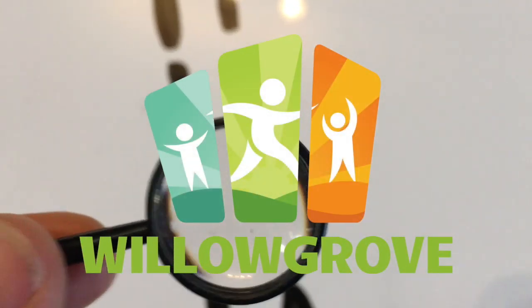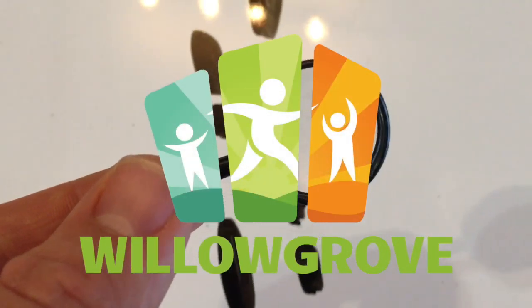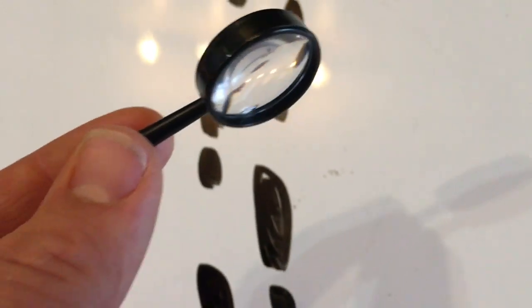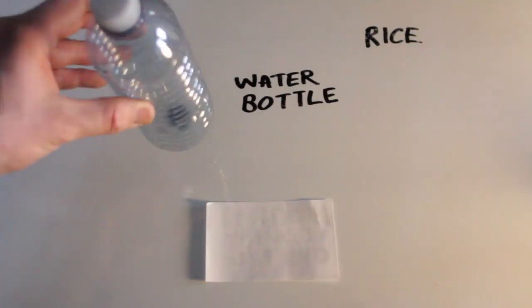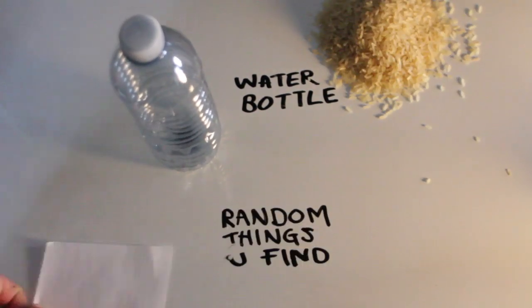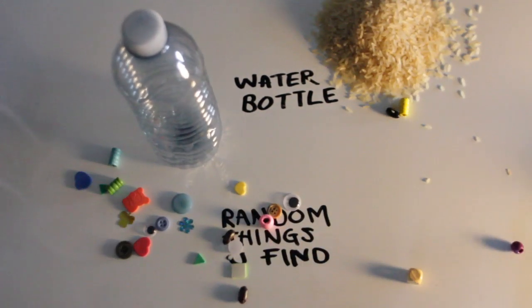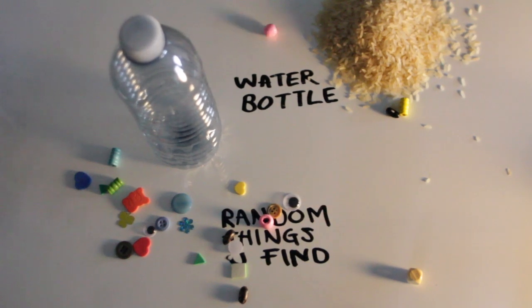Hey, gumshoes! Looking to develop your sleuthing skills? Why not start with this homemade game of I Spy? What you're gonna need is a water bottle, some rice, and some random things that could fit inside the water bottle.